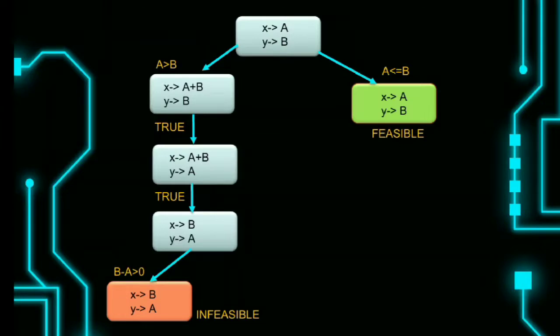Now we have another condition. That is, x minus y is greater than 0. If the condition is true, assert false. But we have an infeasible result.